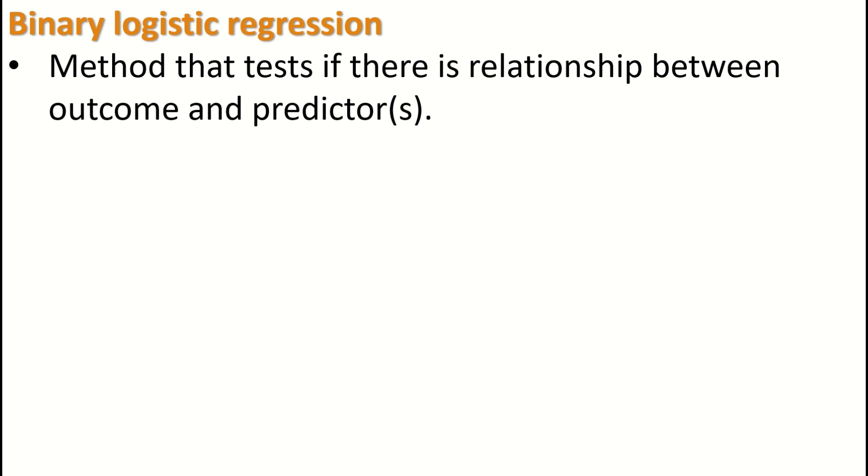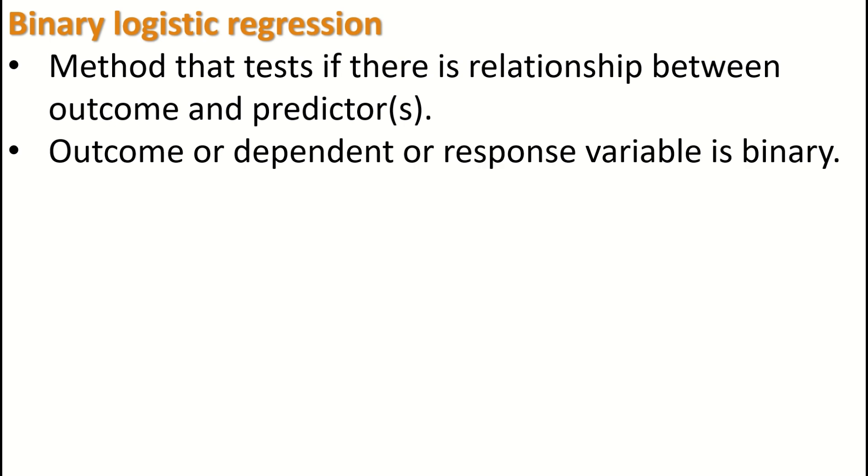The other variable is called the predictor or predictors. The outcome or dependent variable, alternatively called the response variable, has to be binary to perform binary logistic regression. A binary variable is a variable with only two categories in it, such as having heart disease or no heart disease, diabetes or no diabetes.